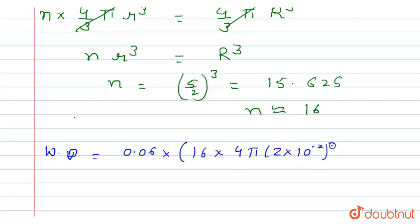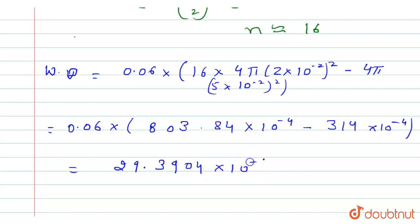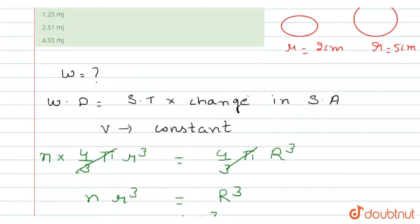We can easily calculate the work done which equals 0.06 into 8.03 point 84 into 10 raised to power minus 4, into 3.14 into 10 raised to power minus 4. Which equals 0.06 into 31.3904 into 10 raised to power minus 4 joules. So this is the answer, this is the work done.